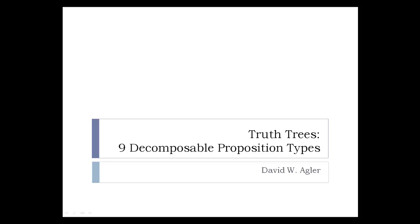In this short lesson, the goal will be to look at a number of different formulas and classify those formulas as one of nine different decomposable proposition types. This is an essential skill for doing truth tree decomposition, because there are nine different decomposition rules, each corresponding to one of the nine decomposable proposition types. So one of the first steps before we even begin to learn how to use the different decomposition rules is to be able to classify any formula into one of these different types.